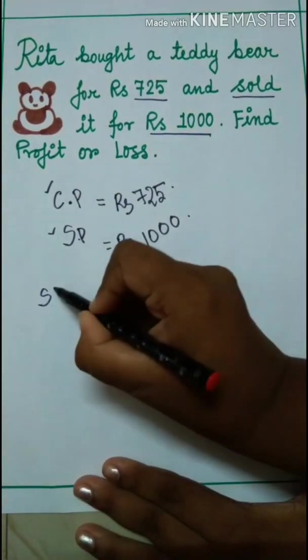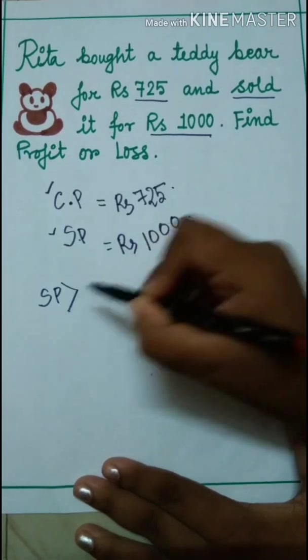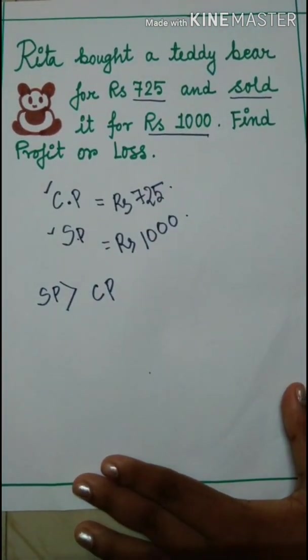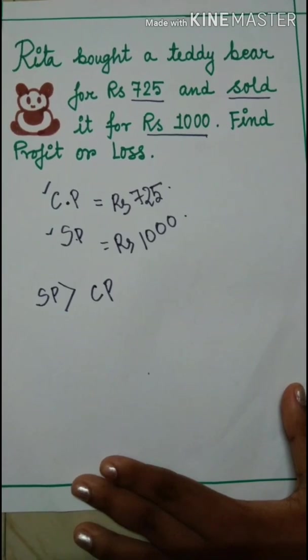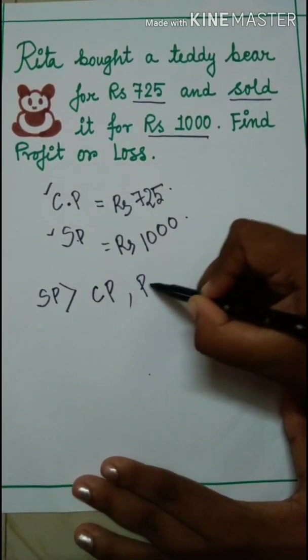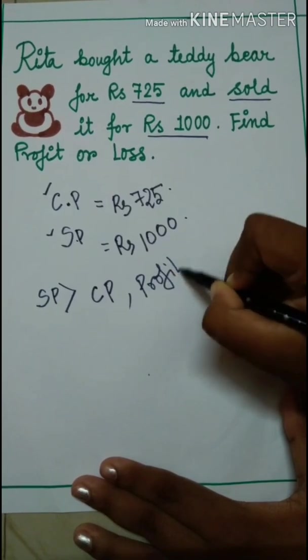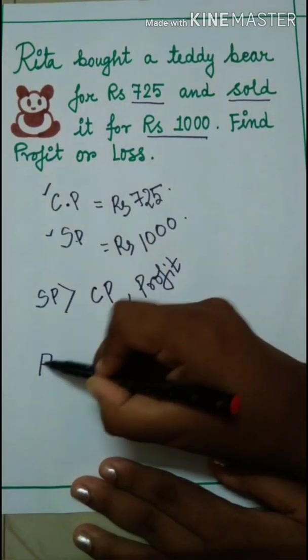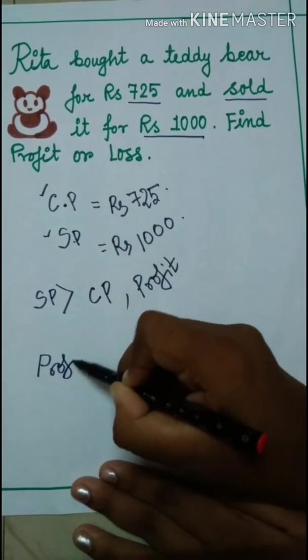Here we can easily see that SP is greater than CP. As SP is greater than CP, of course it will be profit. Whenever SP is greater than CP it will be profit. And as we all know the formula of profit.